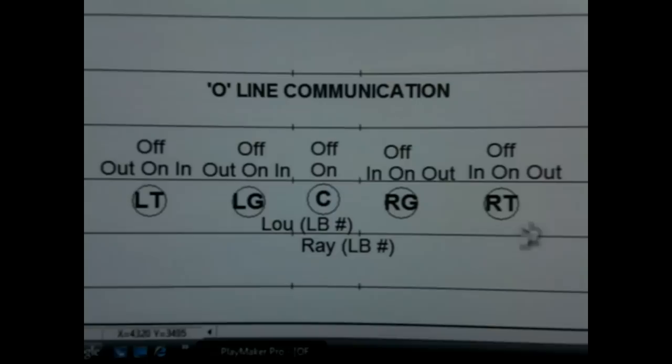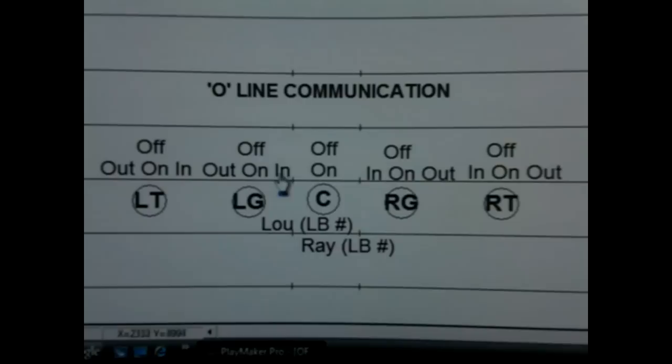If we had a tight end to our right and we're facing an over defense, most of the time we'd get an 'out' call from our right guard as the bandit or B-gap player is either out or in the B-gap. We'd get a 'loo' call because the anchor, the A-gap player, would be to the left. Our left guard would have an 'in' call, and both tackles would have 'out' calls — our open-side tackle has an 'out' call 99% of the time, as very few teams will not be outside our last man on the line of scrimmage.